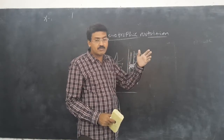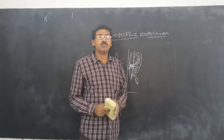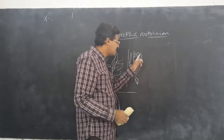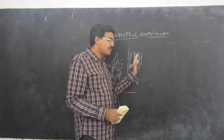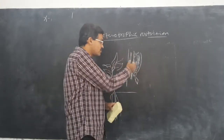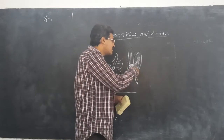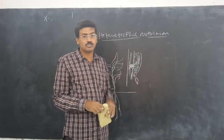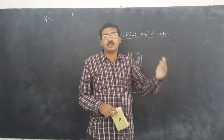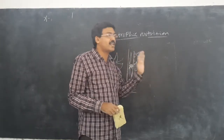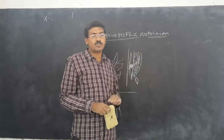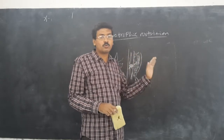This is called heterotrophic nutrition — the Cuscuta plant takes everything from the host plant instead of preparing food itself. Why do we call it a plant? Because it has plant structure: xylem, phloem, cell wall, seeds that germinate, and plant-like body. Chloroplasts are absent, but in all other aspects it looks like a plant. Even though it depends on another organism for food, we call it a heterotrophic plant, not an animal.